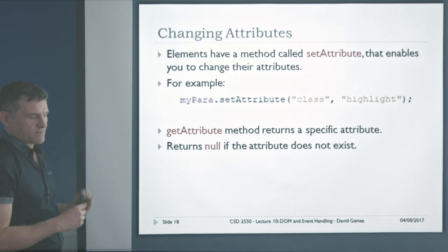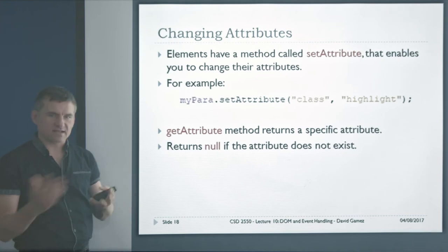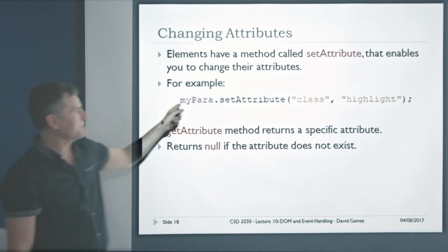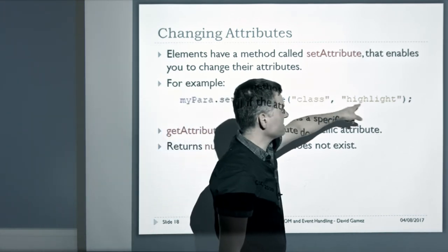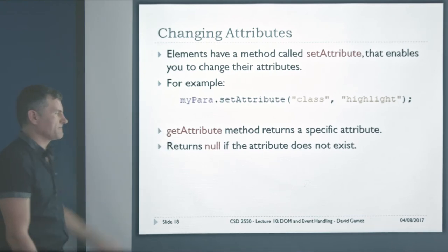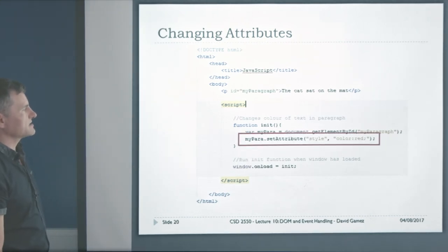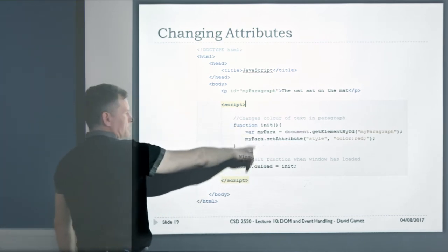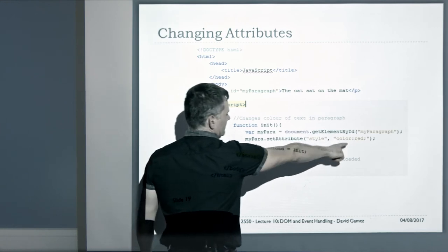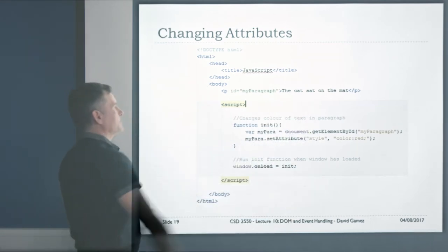Elements within the document object model have a method called setAttribute. Attributes are things you can add to elements like class, ID, width, and length. Using JavaScript, we can manipulate and change those attributes — for example, calling setAttribute to change a paragraph's class to 'highlight'. We can also use getAttribute to find out what an attribute is currently set to; it returns null if the attribute doesn't exist. In this example, we access a paragraph using getElementById and set its inline style color to red dynamically using JavaScript.